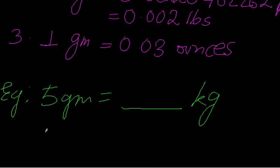See, we know that one gram is point zero zero one kg, so five gram will be what? Five multiplied by zero point zero zero one, which gives me...